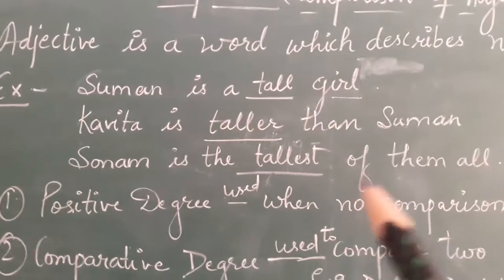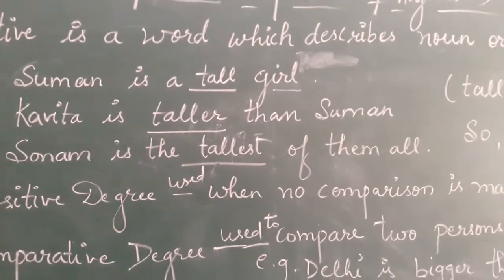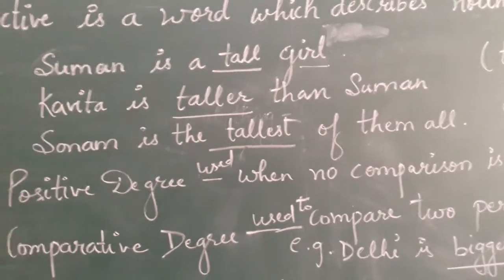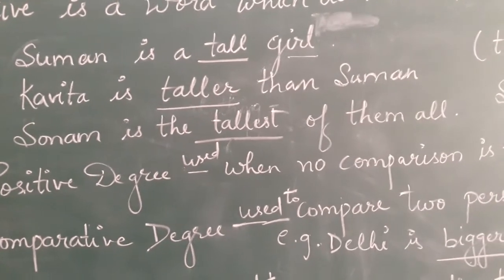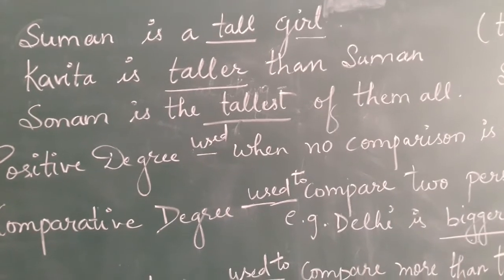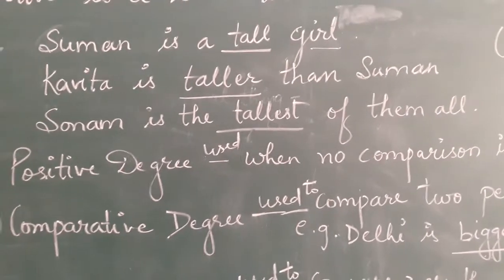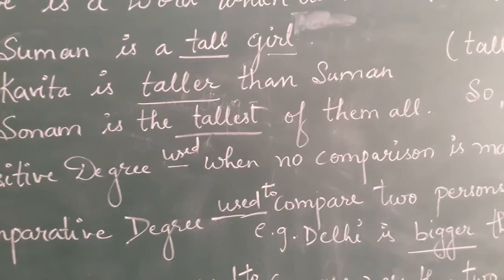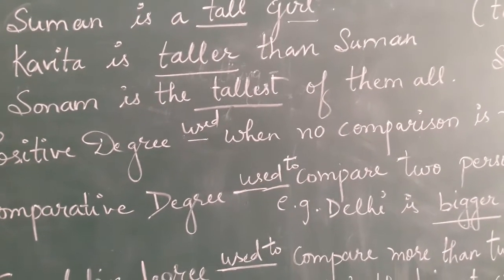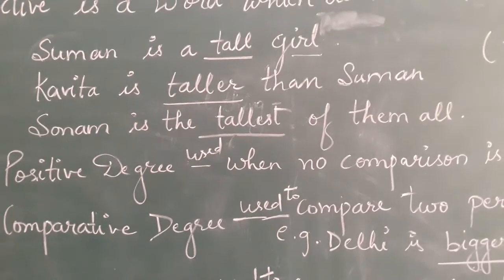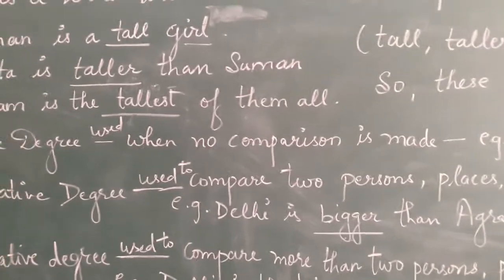Example number 1: Suman is a tall girl. Here, girl is a noun and the word tall describes the noun. Second sentence: Kavita is taller than Suman — here comparison is made between two girls. Third sentence: Suman is the tallest of them all — here comparison is made among all the girls. So tall, taller, tallest are called degrees of comparison.